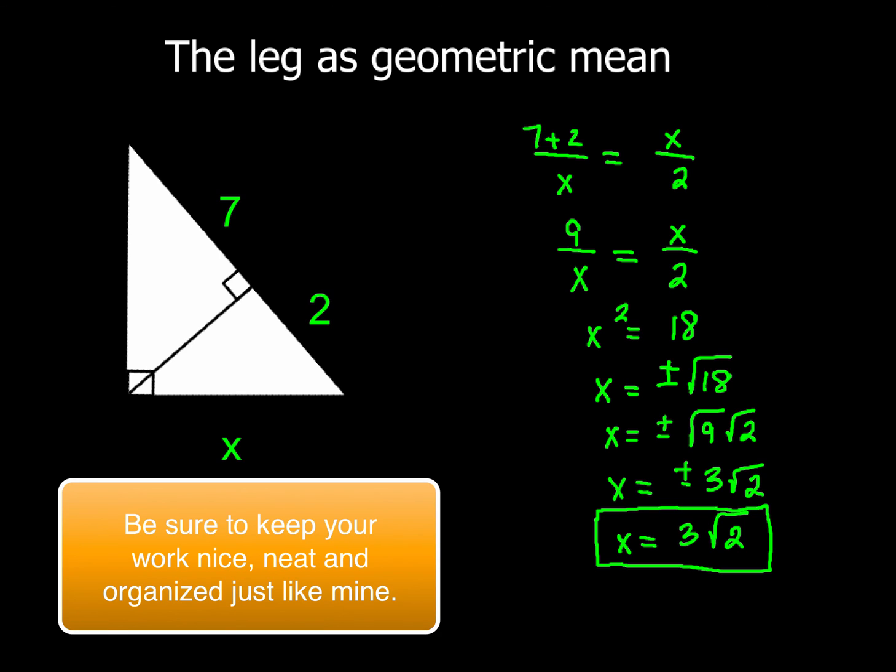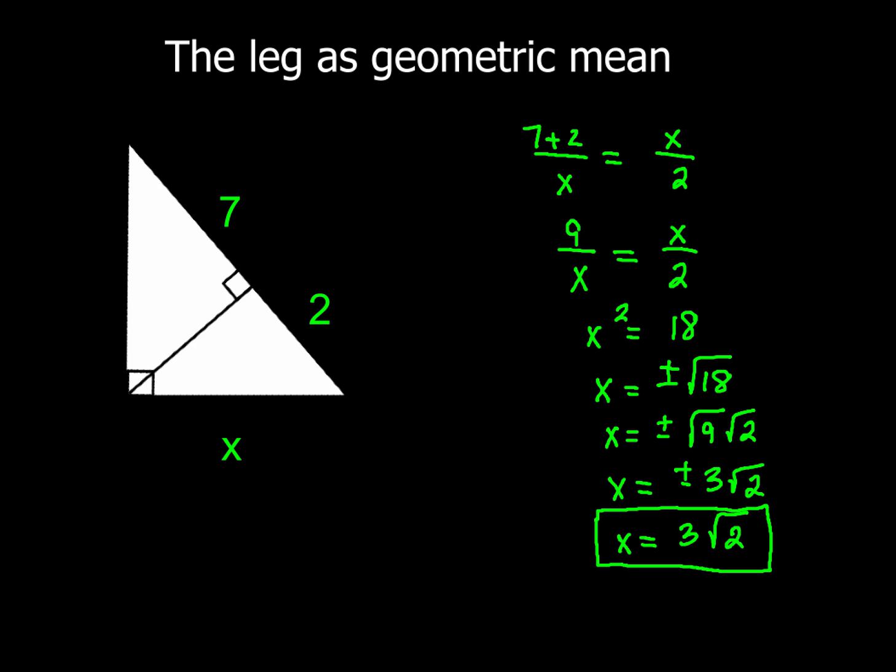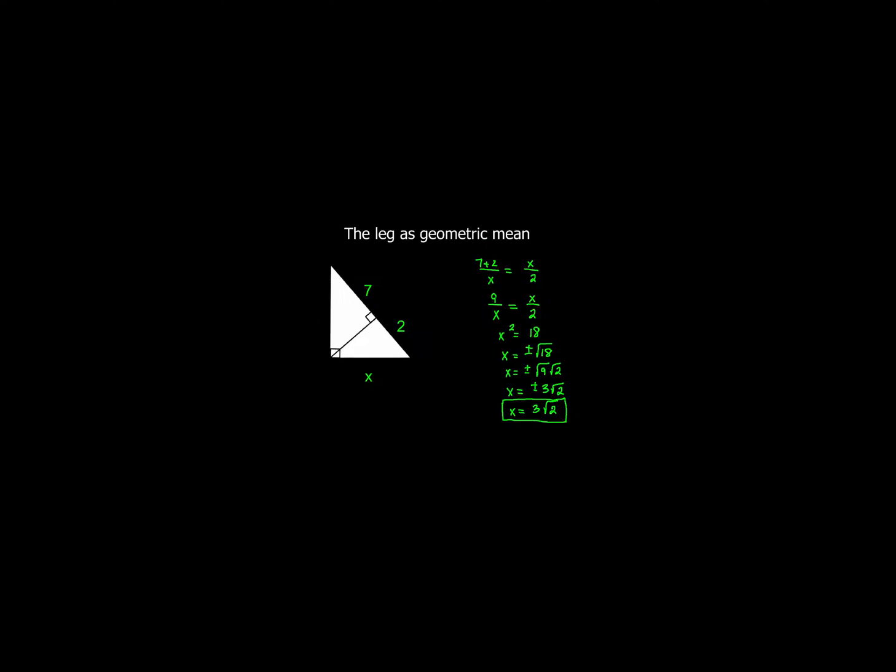So that's it for this video. I just wanted to give you guys a few more examples when you're taking a look at using the leg as the geometric mean for a right triangle. So thanks for watching this one. Hopefully by now you'll get this down. It just takes a little bit of practice, but I think if you follow these patterns and these steps, you'll be solving these problems no problem at all from now and in the future. Best of luck to you. Thanks for watching. You guys have a great day. And I'll catch up with you later. Peace out.